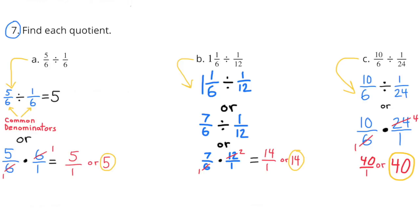Part B: One-and-one-sixth divided by one-twelfth. One-and-one-sixth can be rewritten as seven-sixths. So seven-sixths divided by one-twelfth is the same as seven-sixths times the reciprocal of one-over-twelve, which is twelve-over-one. Seven-sixths times twelve-over-one equals fourteen-over-one, or fourteen.